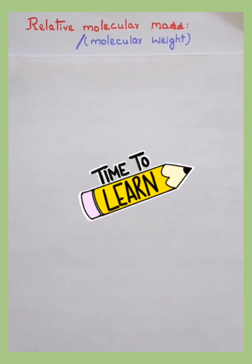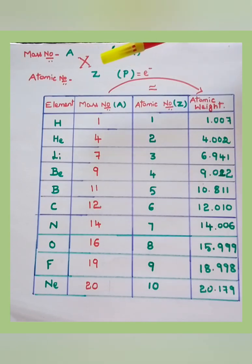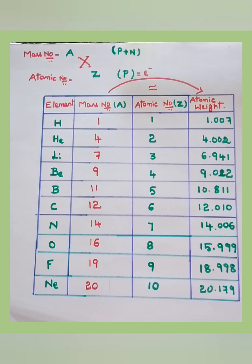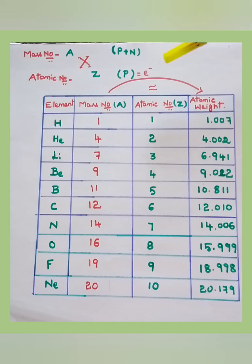Now let's move into the topic: relative molecular mass. Before moving to the numericals related to atomic weight of a given element or compound, let us check out the basics. We represent an element with mass number A and atomic number Z. The mass number is the number of protons plus neutrons present in an atom. The atomic number is the number of protons, and the number of protons equals the number of electrons.